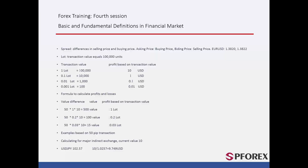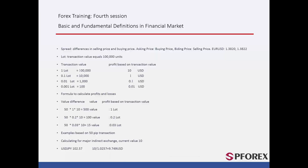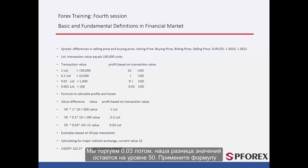Example 2: We are trading 0.2 lot. Our value difference is still 50. Applying the formula: 50 times 0.2 times 10 equals 100. Example 3: We are trading 0.03 lots. Our value difference remains at 50. Applying the formula: 50 times 0.03 times 10 equals 15.